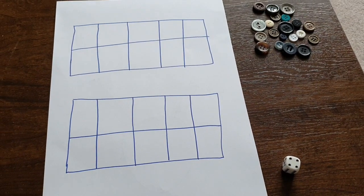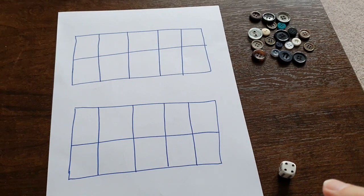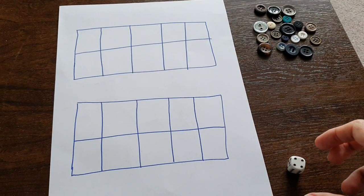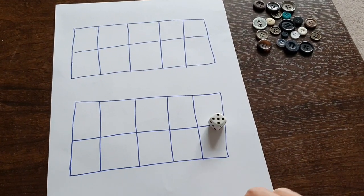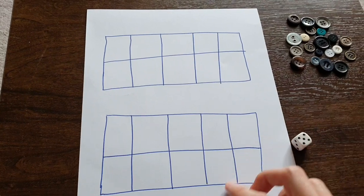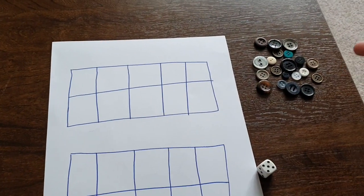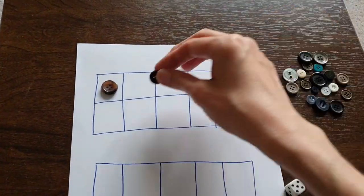It works best if you've got another player because then you see who is going to fill the number frames to 20 and you do it together. So one of you rolls first and I've got five so I'm going to put five on my ten frame but the other person also does it at the same time.